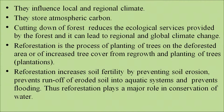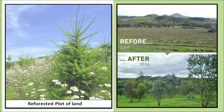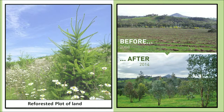Reforestation is the process of planting trees on deforested areas, or increased recovery from the regrowth and planting of trees, which is called plantation. Reforestation increases soil fertility by preventing soil erosion, prevents runoff of eroded soil into aquatic systems, and thereby prevents flooding. Thus, reforestation plays a major role in conservation of water. The diagram on your screen shows two scenarios: on the left is a reforested area, and on the right is a comparison of the same field — a barren land in 2008 — which after replantation became the lush area shown in the 2014 picture.